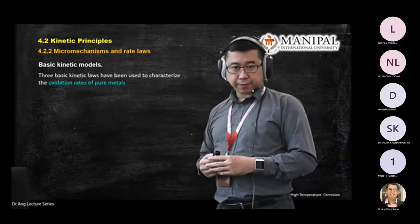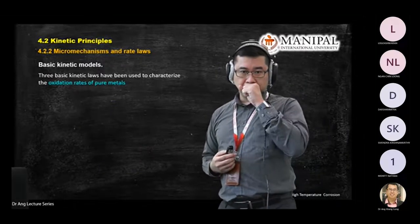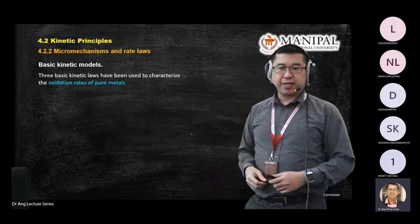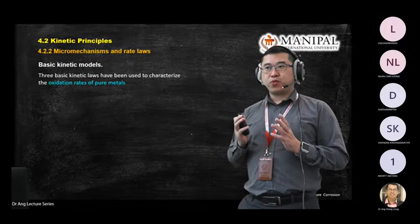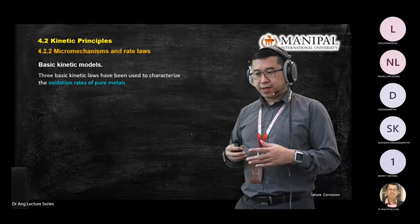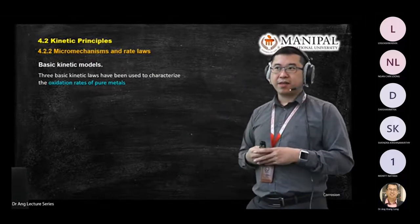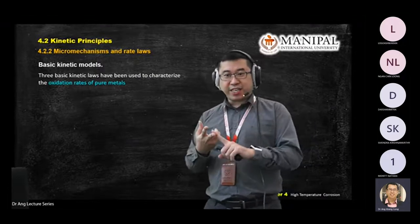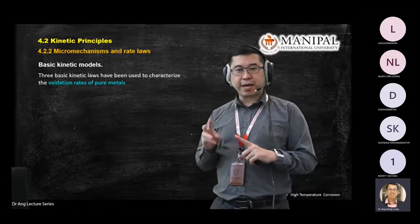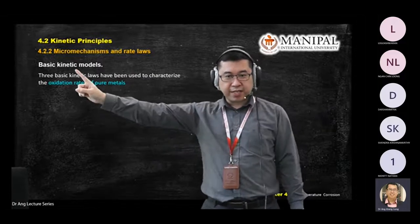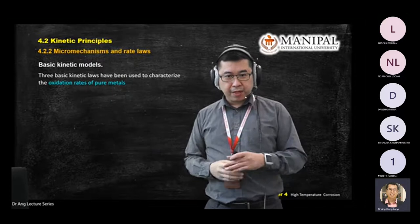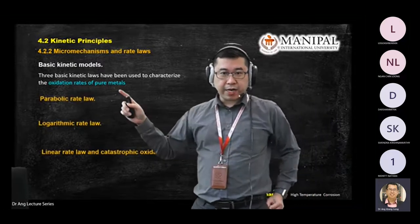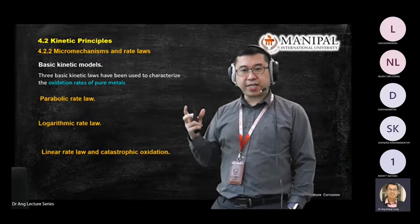Next, we look at some kinetic models. When we talk about kinetic principles or equations used to calculate the kinetic models, we have three types of equations — which you learned in your advanced mathematics. You have three kinds of equation: linear equation, quadratic equation, and polynomial equation. Remember these three types of equations — they're going to help you explain what are the kinetic models used to characterize the oxidation rates on pure metals.